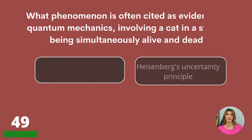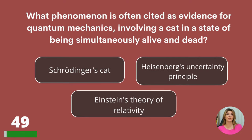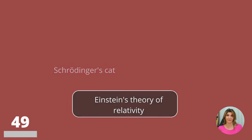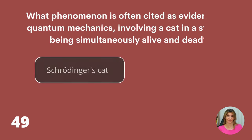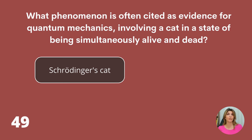What phenomenon is often cited as evidence for quantum mechanics, involving a cat in a state of being simultaneously alive and dead? Schrödinger's cat, Heisenberg's uncertainty principle, or Einstein's theory of relativity? Schrödinger's cat.